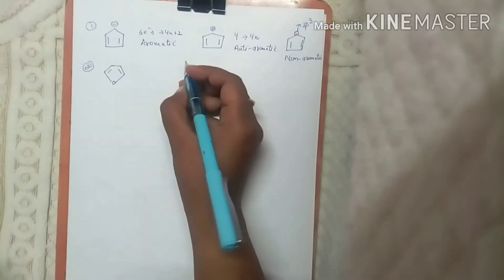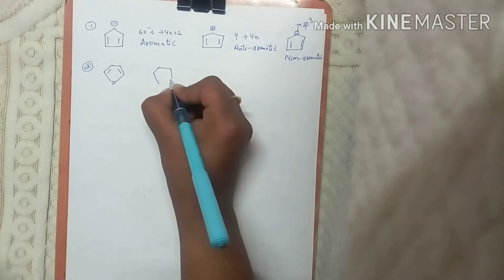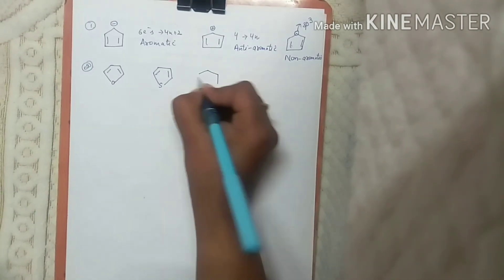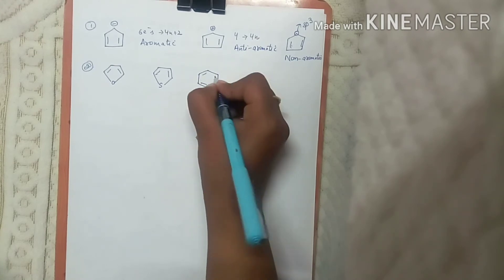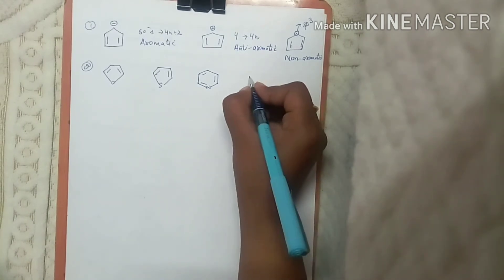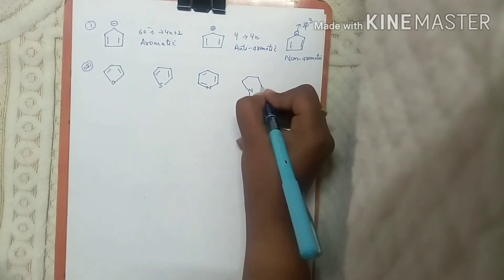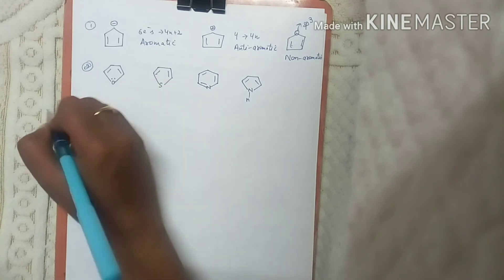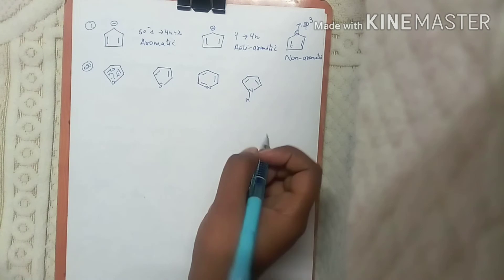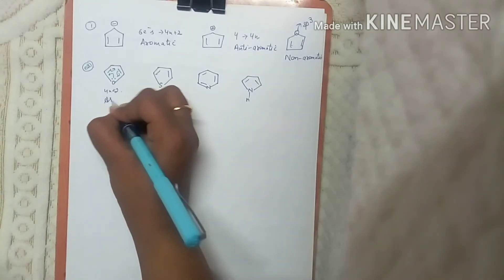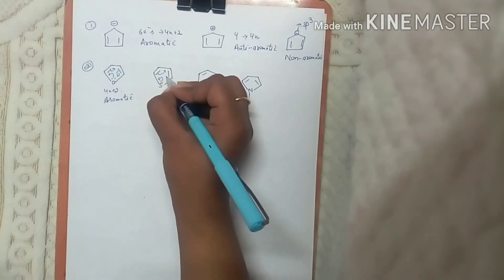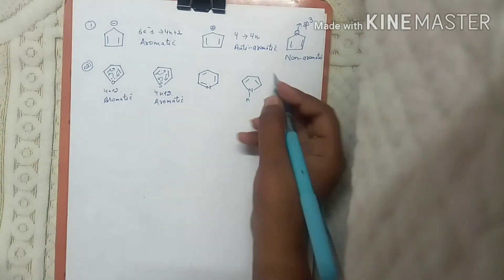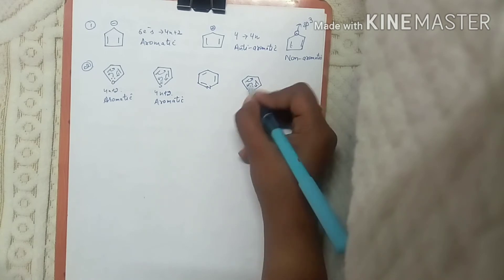Now consider furan, thiophene, and pyridine. In furan, there are six electrons in resonance, following the 4n+2 rule, so it is aromatic. In thiophene, six electrons are in conjugation, following the 4n+2 rule — also aromatic. In pyridine, six electrons — also aromatic.